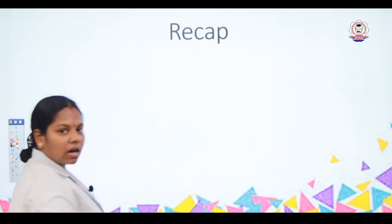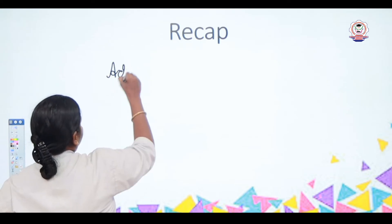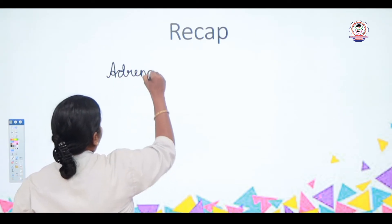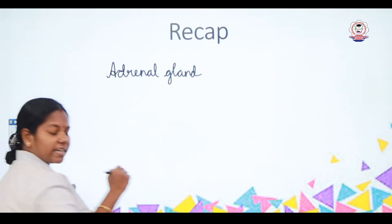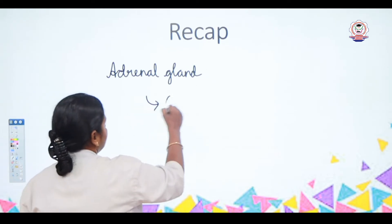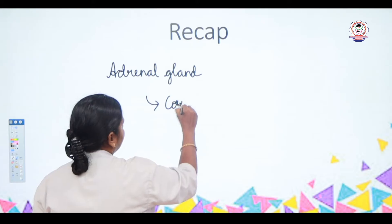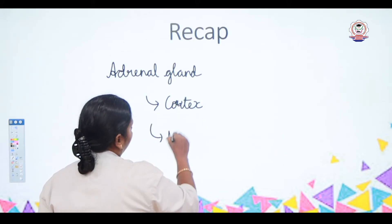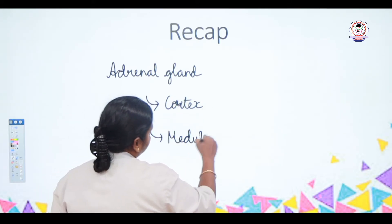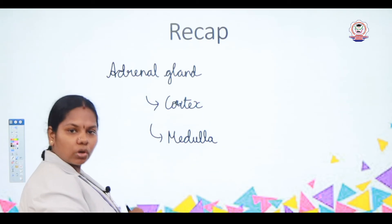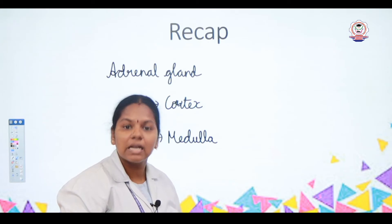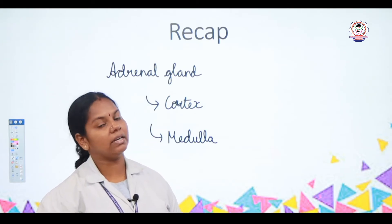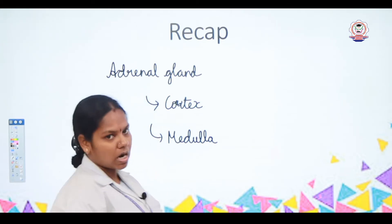In the previous session we discussed about the adrenal gland — its secretion and how it is divisible into two parts: the Adrenal Cortex and the Adrenal Medulla. Adrenal Cortex secretes Glucocorticoid and Mineralocorticoid hormones, while Adrenal Medulla secretes Adrenaline and Noradrenaline, which are referred to as the Emergency Hormones.